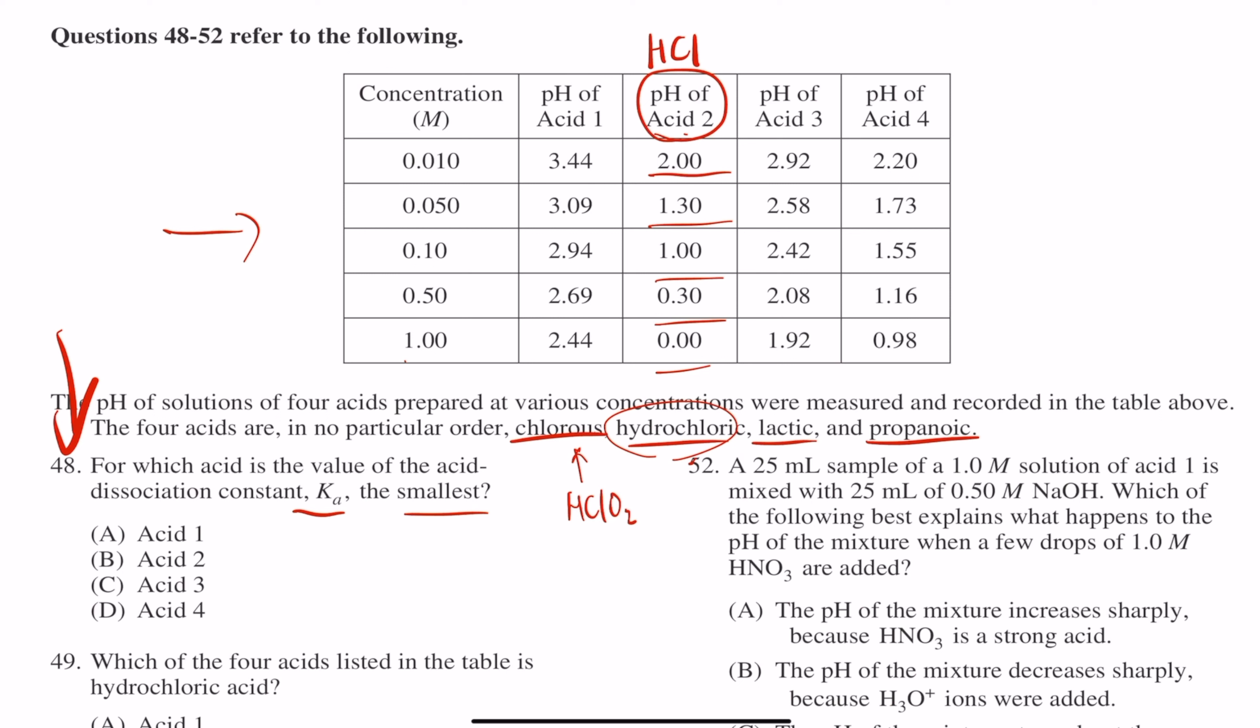And if you just take a look, just look at the concentration of 0.01, clearly, acid 1 is the biggest pH. Even at one molarity concentration, still 2.44, acid 1 is the highest. That's probably why acid 1 is the least acidic compound in this case, probably meaning that it's got the lowest Ka value.